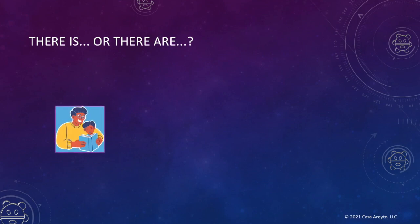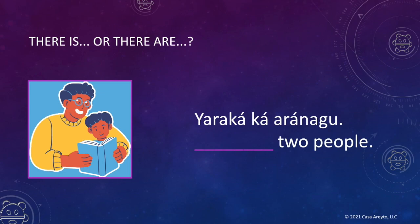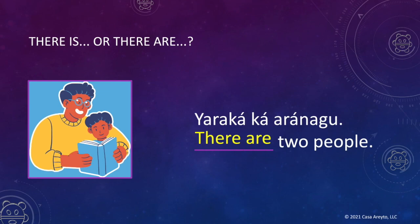Now let's look at the next example. Let's look at the picture and the sentence that goes with it — the picture gives me a clue. Now let's look for context clues. The word that comes after yara ka is ka, and that means two. So we fill in the blank with 'there are' because we're talking about two or more things. Now let's read the sentence aloud: Yara ka ka ara nāgu. There are two people.